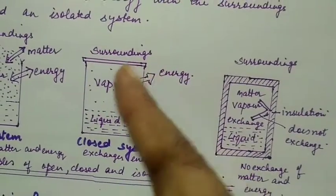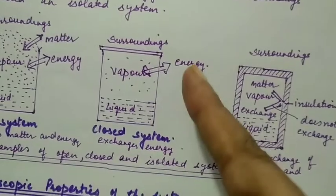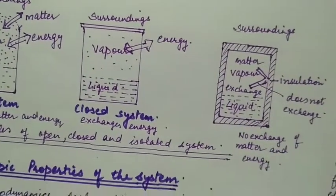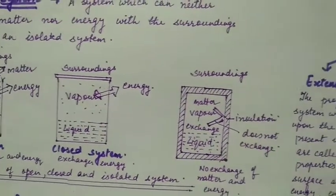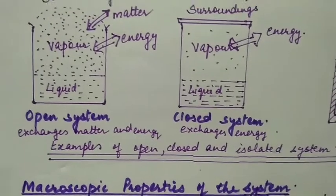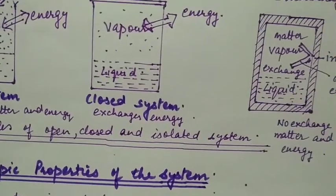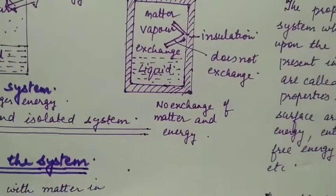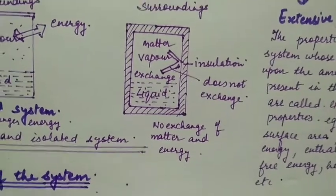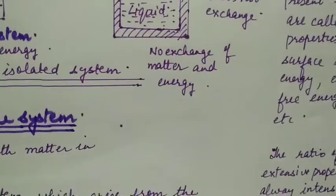Matter cannot go out, but energy can go out - this is a closed system. Open system exchanges matter and energy, closed system exchanges only energy, and in isolated system, no exchange of matter and energy.